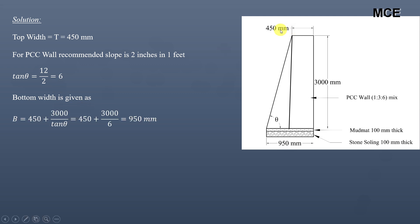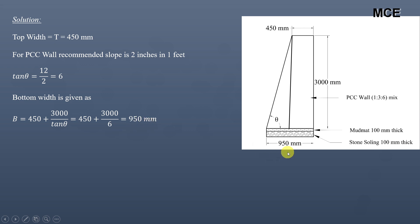To find the bottom width, divide the wall into two shapes: a rectangle and a triangle. The rectangle contributes 450 mm (the top width, which is constant), and the triangular portion contributes the height divided by tan θ. So bottom width = 450 + 3000 ÷ 6 = 950 mm, which matches the value shown in the figure.